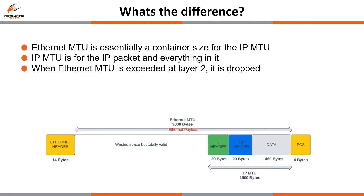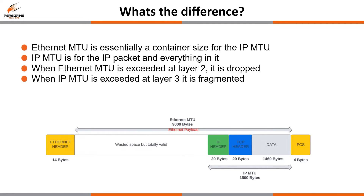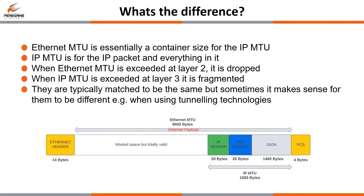When the Ethernet MTU is exceeded purely at layer 2, the frame is going to be dropped — for example on a switch trunk interface. When an IP MTU is exceeded at layer 3, it is fragmented. In the diagram, if the IP packet exceeded 1500 bytes it would still need to be fragmented despite having an Ethernet MTU of 9000 bytes to play with, because it's still an independent value. They should typically be exactly the same value unless required to change, for example to account for additional headers within tunneling technologies.